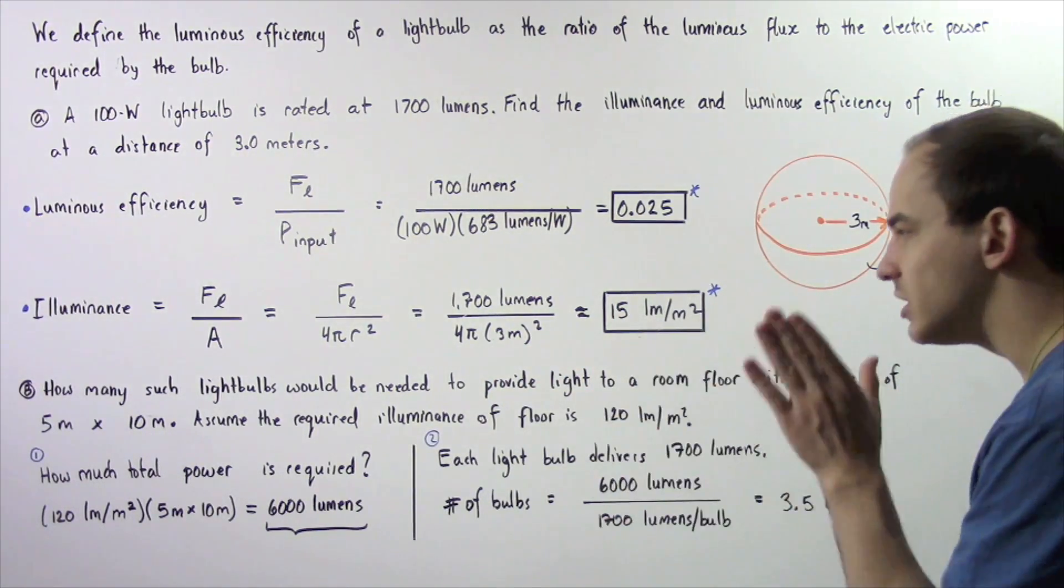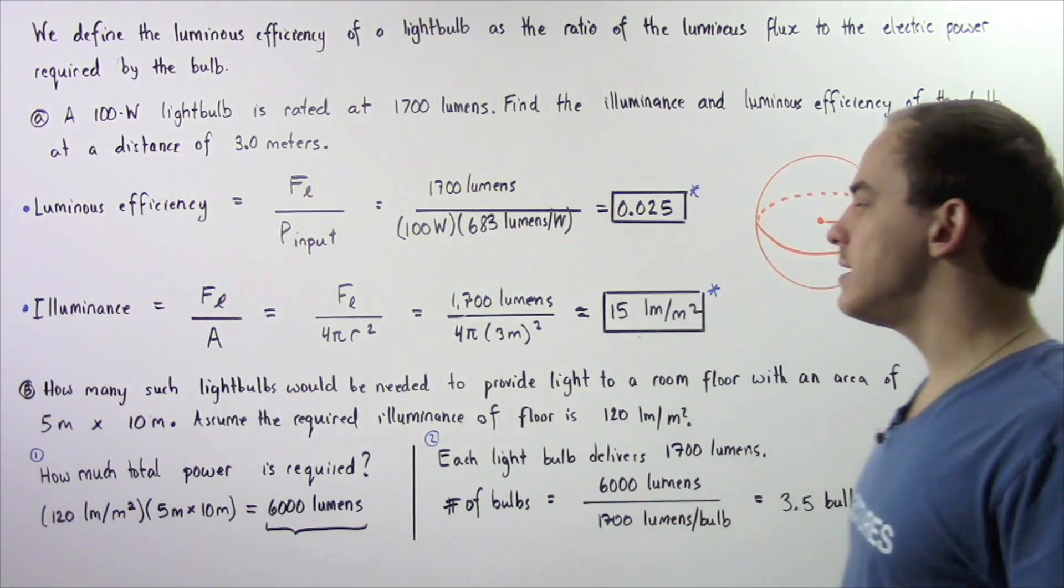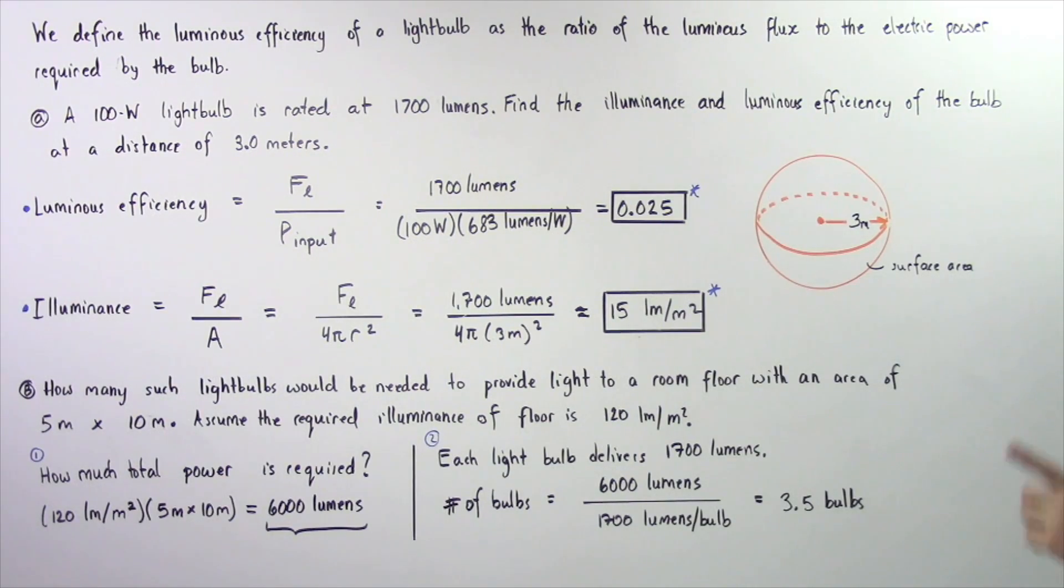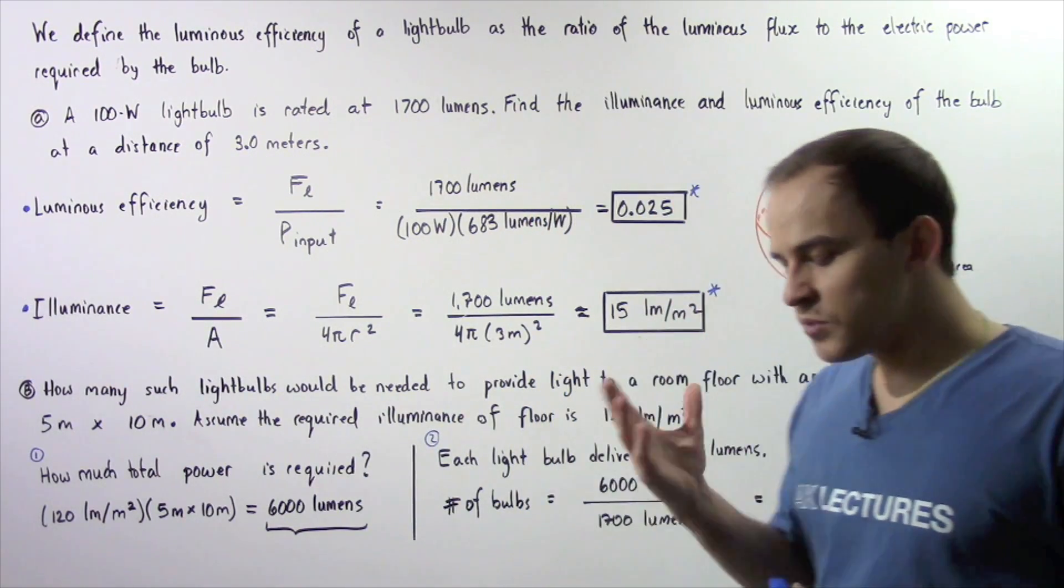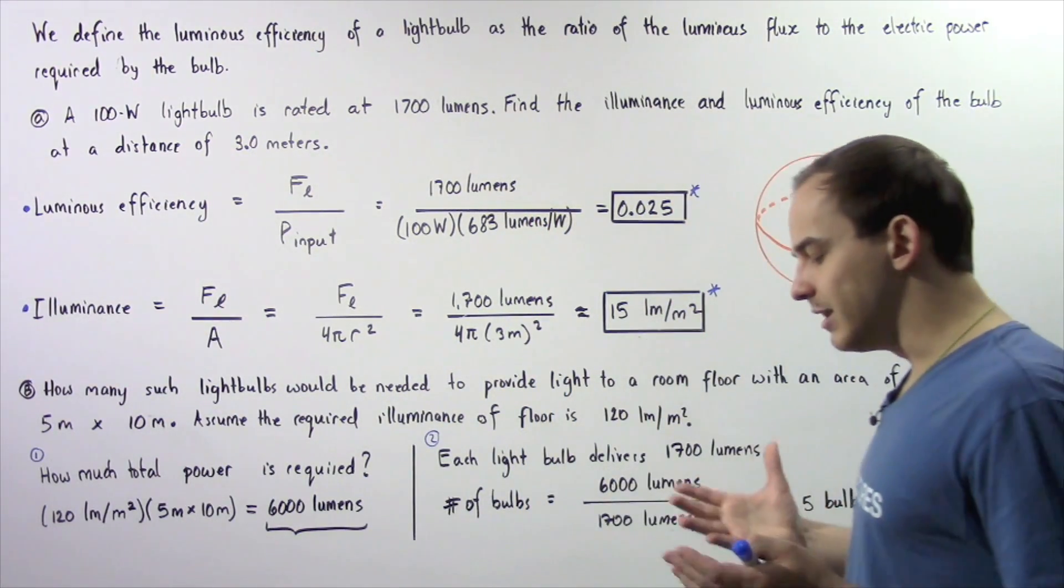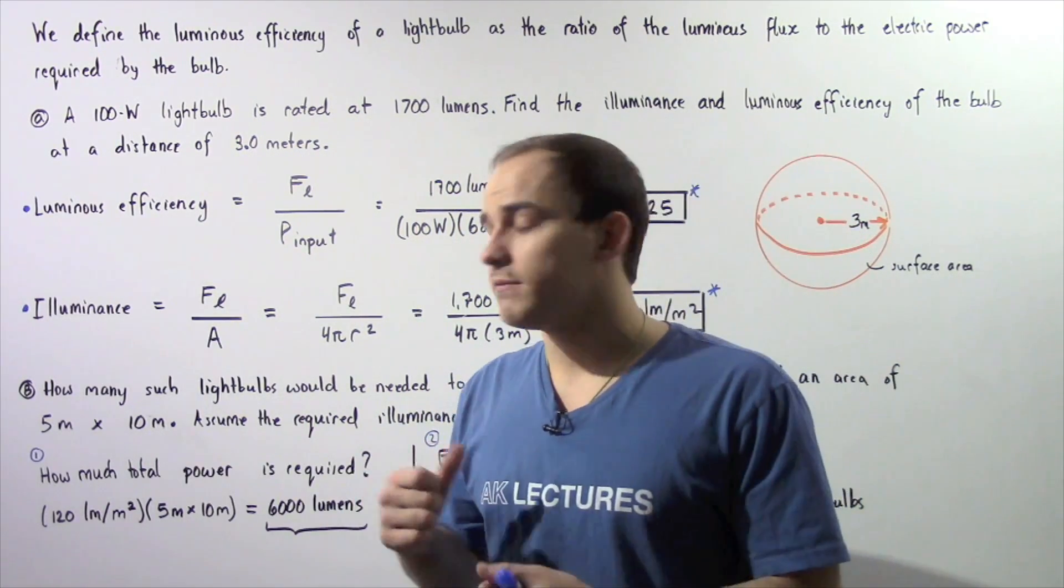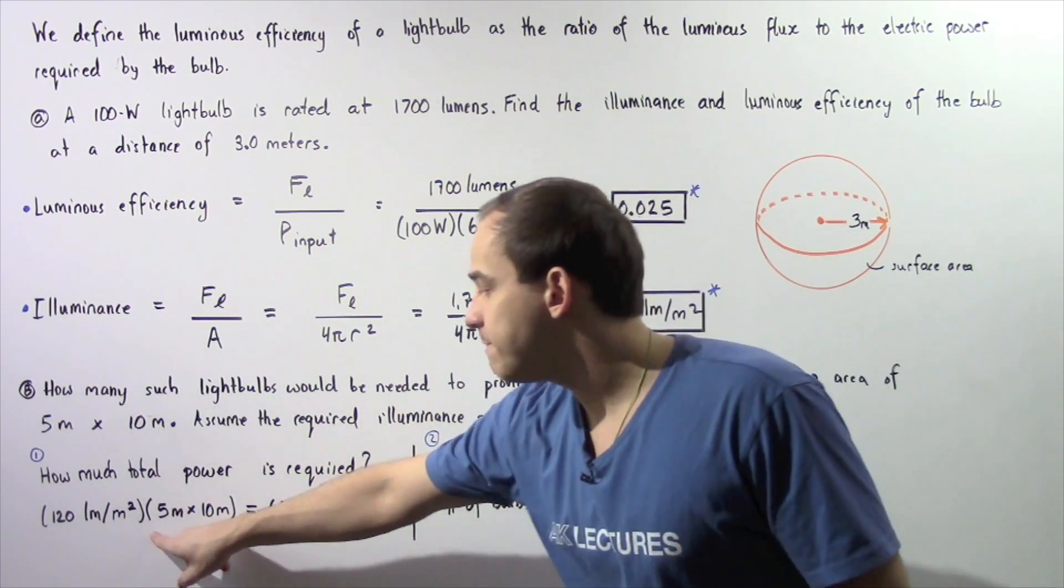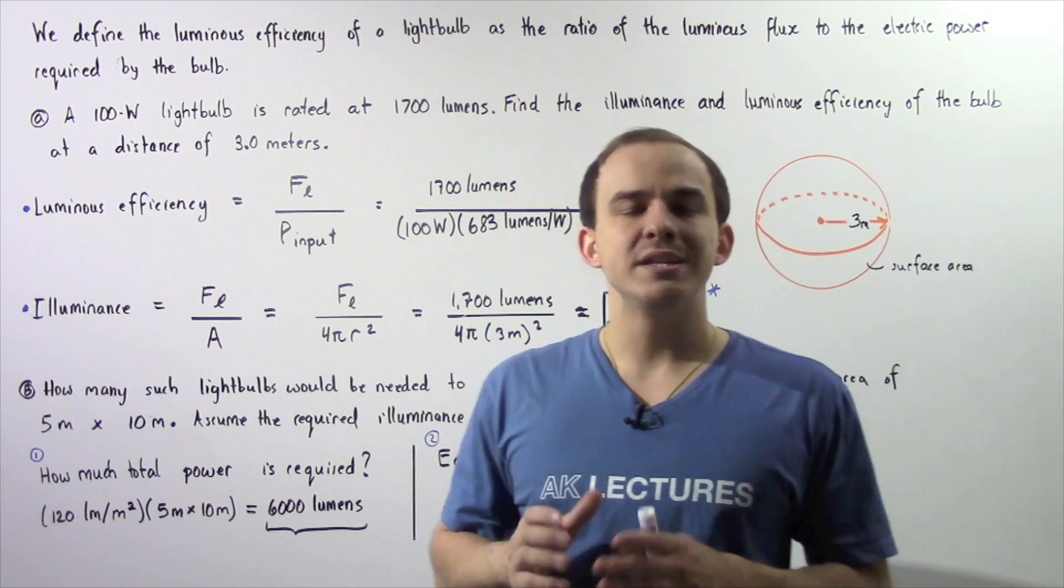How many such light bulbs would be needed to provide light to a room floor with an area of 5 meters times 10 meters assuming that the required illuminance of the floor is 120 lumens per meter squared? In part 1 of section B we want to calculate the total power in lumens required by the area of the floor. So 120 lumens per meter squared multiplied by 5 meters times 10 meters gives us 6000 lumens required by the floor.